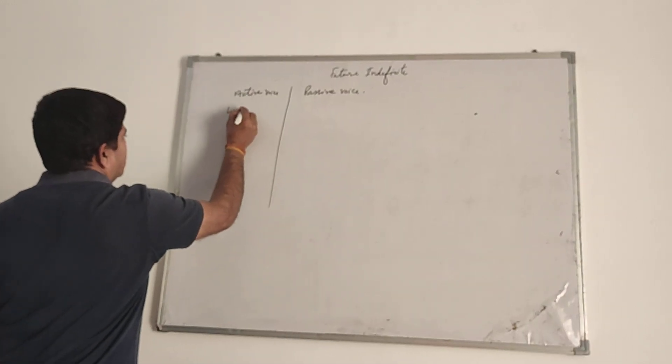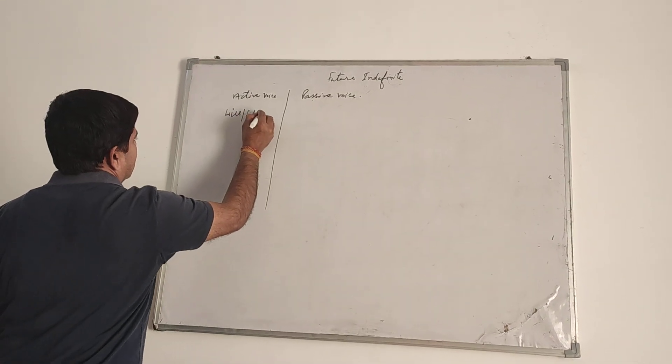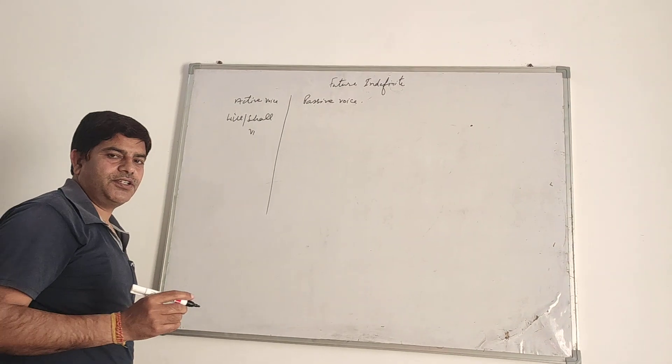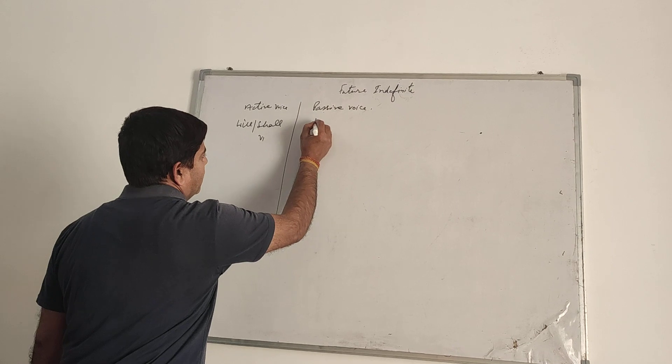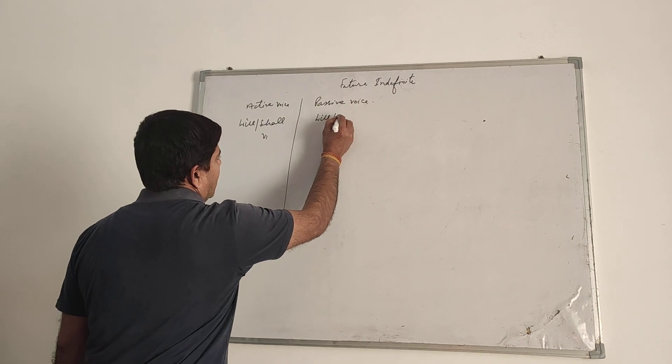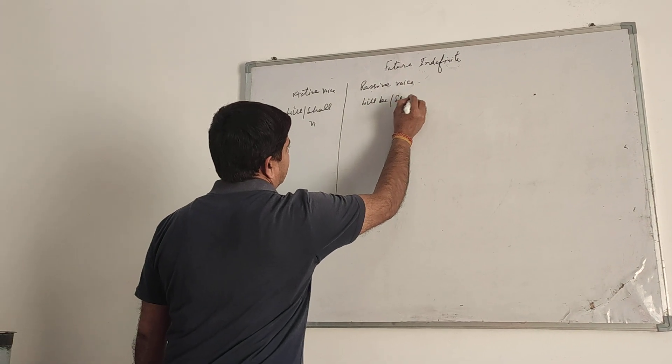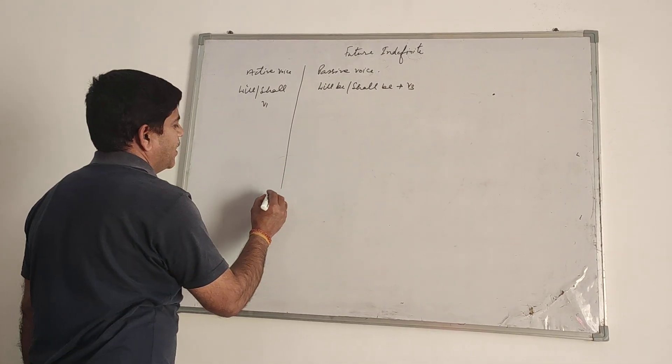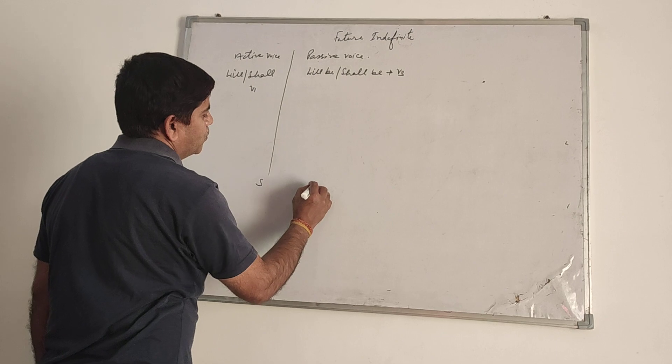In active form, we will use will and shall and first form of verb. When we change it into passive form, then it will become will be and shall be plus third form of verb.